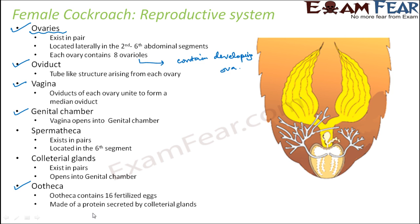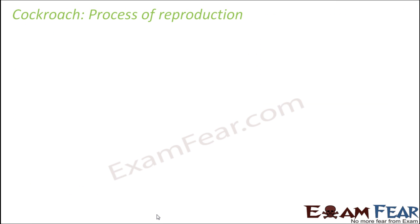The ootheca is a structure that contains around 16 fertilized eggs and is made up of protein secreted by the colateral glands. In summary: the ovaries produce eggs, which travel through the oviduct to reach the genital chamber near the vagina. In the genital chamber, the spermathecae receive sperms from the male cockroach. Fertilization between the sperm and egg occurs, and the fertilized eggs are enclosed within the ootheca.